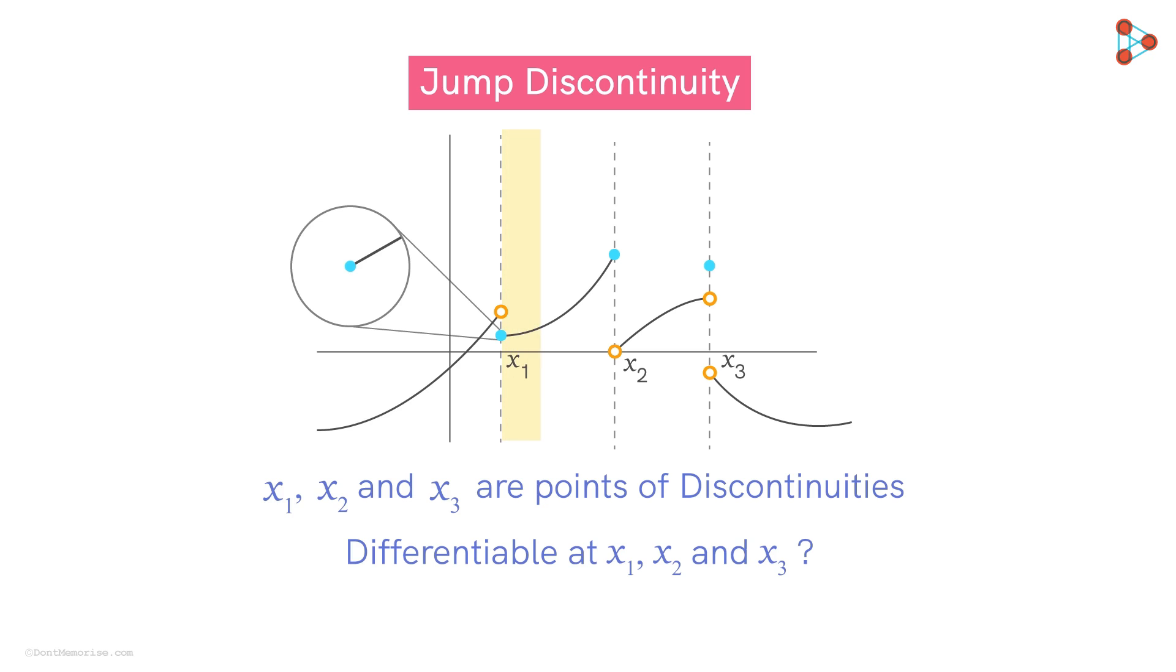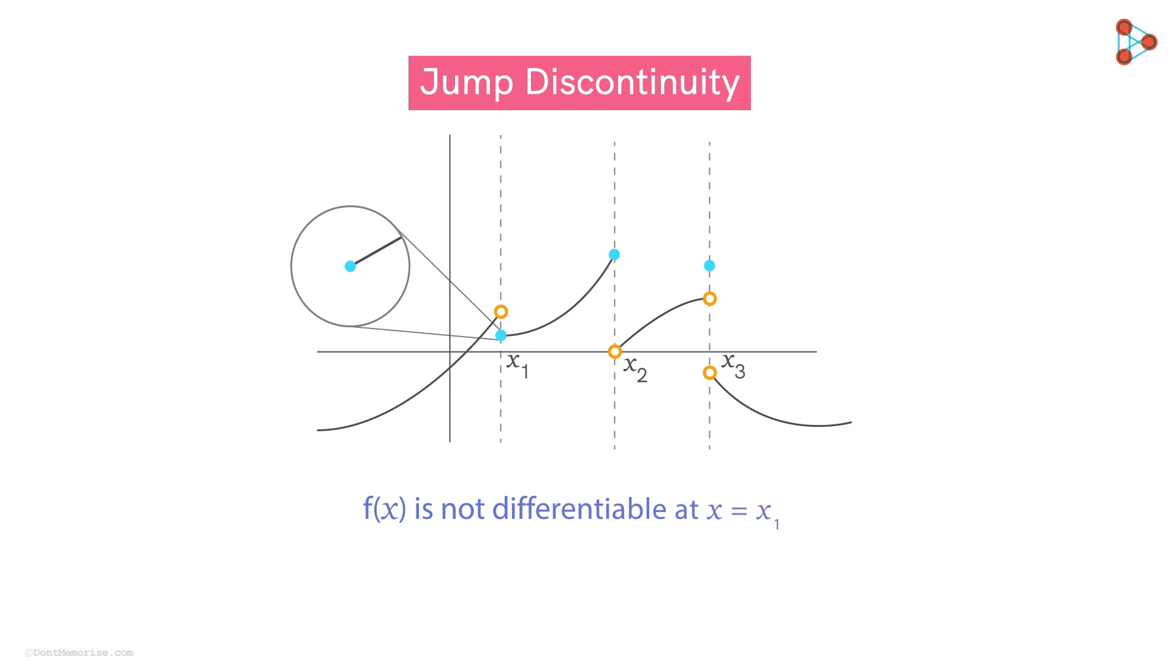The function is defined in the immediate left neighbourhood of this point, but it's defined somewhere else. This point is not connected with the graph on the left. We cannot approximate the graph near this point by a single straight line on both sides of the point. So, at X1, the function is not differentiable.